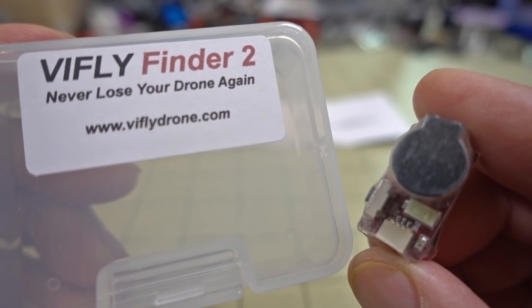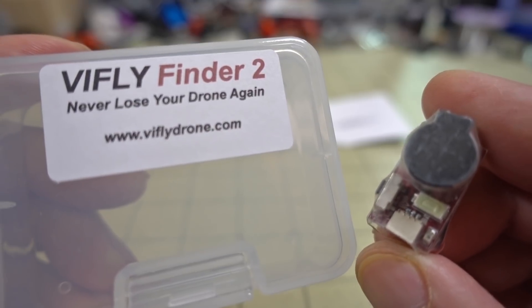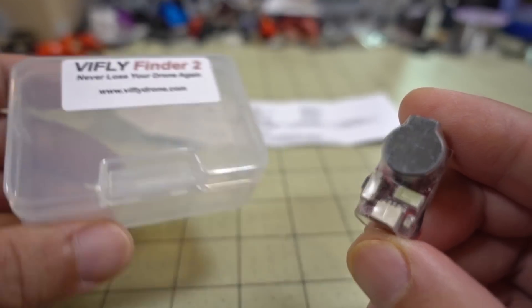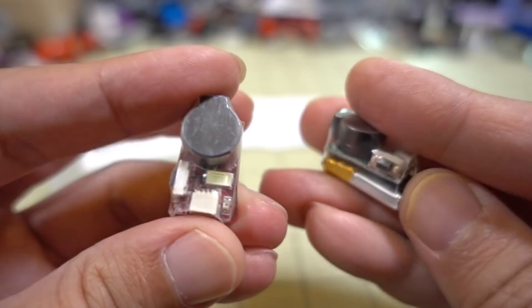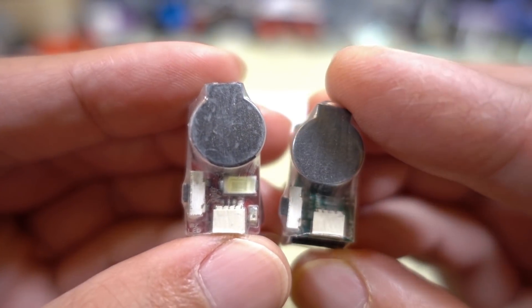Okay, in this video we're checking out the VFLY FINDER 2. This is an updated version of the lost model alarm that I reviewed a few months ago. It looks pretty much the same as version 1. You've got version 2 on the left here and version 1 on the right.